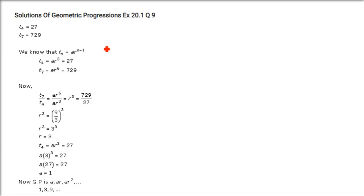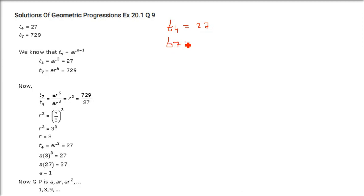Next problem: the 4th term of a GP is 27 and the 7th term is 729. Find the GP. So T4 = 27 and T7 = 729.